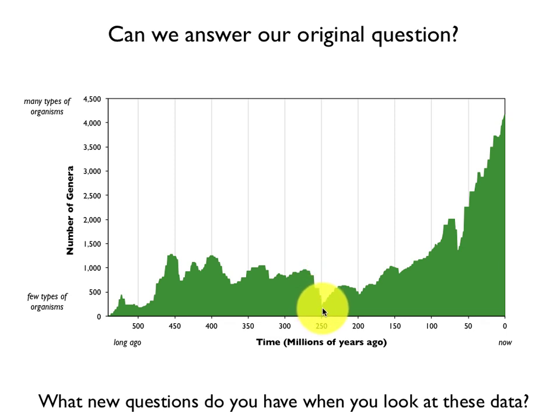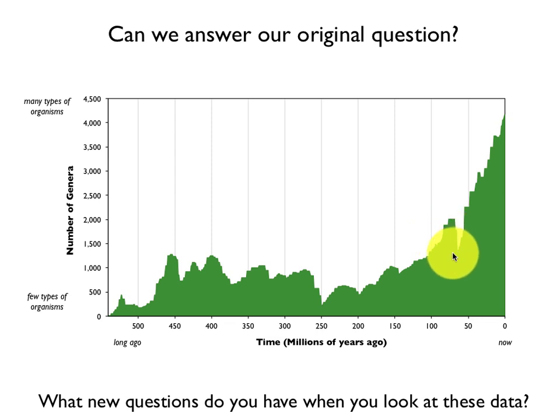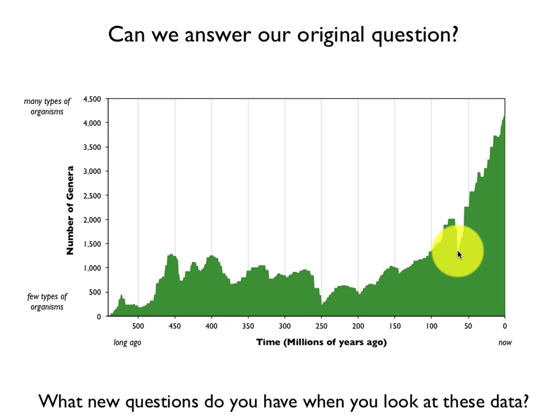Many of my students fixate on a couple of different points — this spot right here where all of a sudden the number of genera drops, and again here. And they ask: why does it do that? We can help them improve that question from a vague 'why' question to: what caused the number of species to go down suddenly? Now that we have that as one of our main questions — along with many others posted on our wall of wonder — we're going to start looking at this particular drop at about 65 million years ago, which is when the dinosaurs went out.